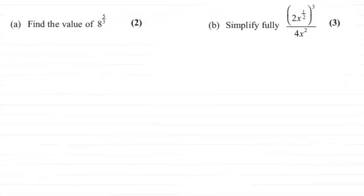Hi there. Now in this question we've got to, first of all, find the value of 8 to the power 5 thirds and in the second one simplify fully 2x to the power half all cubed divided by 4x squared.